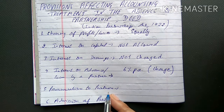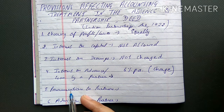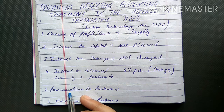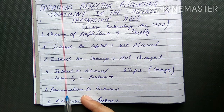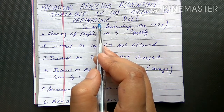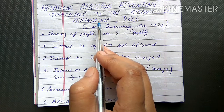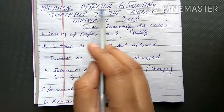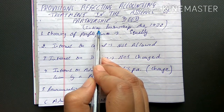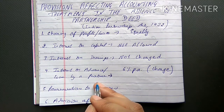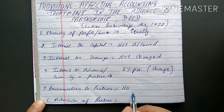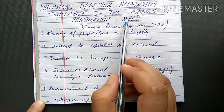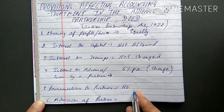The fifth provision is remuneration to a partner. Remuneration is a wider term that includes salary, commission, and bonus. If a deed was made and it specifies that a partner is to be given a certain salary or commission, it must be paid accordingly. But if no deed was made, the Indian Partnership Act 1932 states that no remuneration of any kind — salary, commission, or bonus — will be paid to any partner.